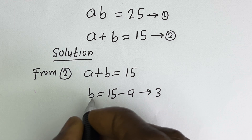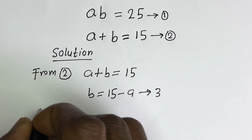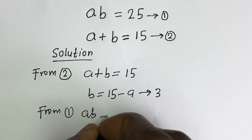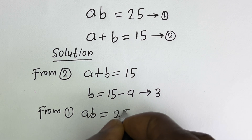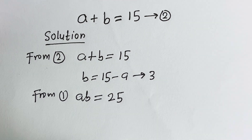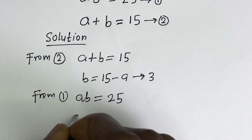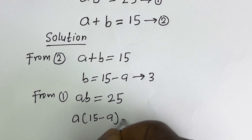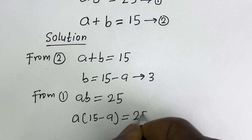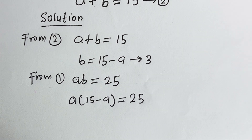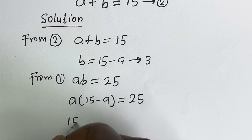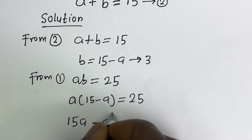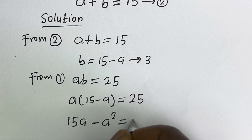From equation 1, ab is equal to 25. Let us substitute for b: a times (15 minus a) is equal to 25. Expanding: 15a minus a squared is equal to 25.